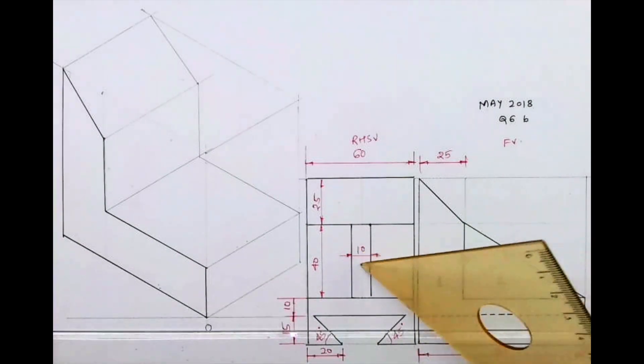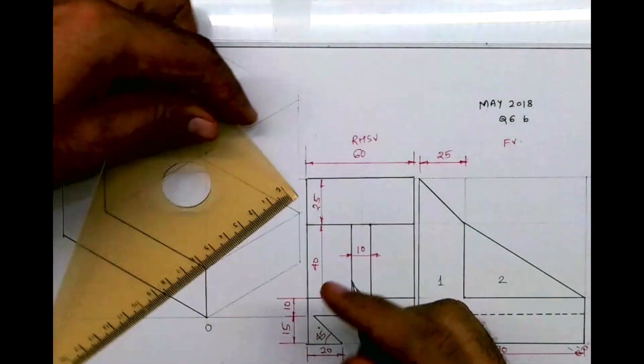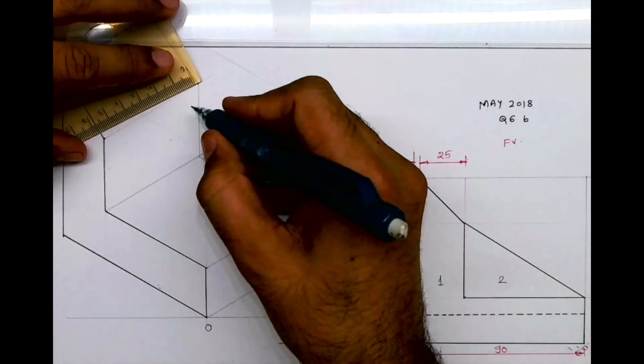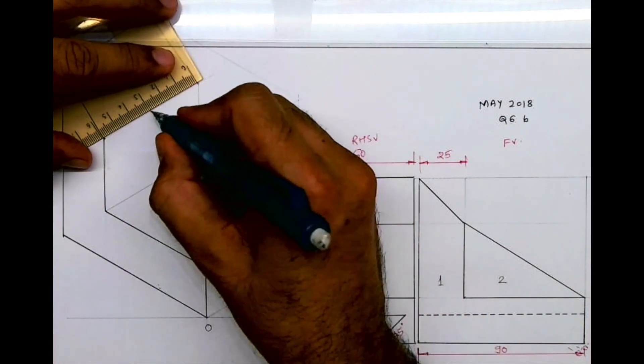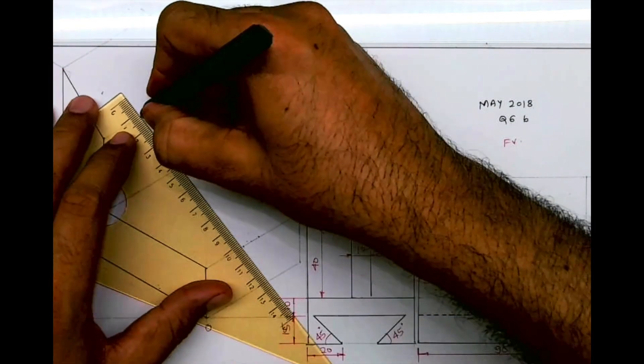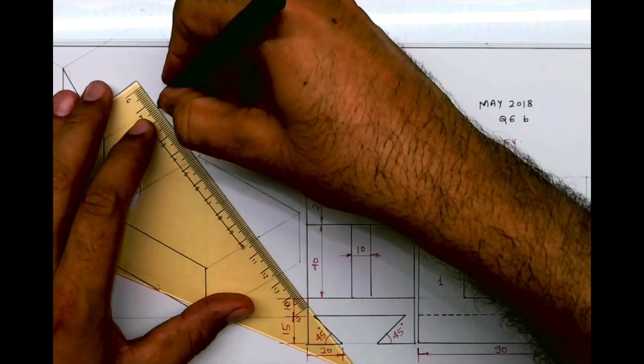Now after this we have this part. So what we'll do, we'll take the midpoint of this and we'll take 5 on both the sides. Again you'll take the midpoint of this and you'll take 5 on both the sides. We are doing part 2. And we'll join this, so we are done with part 2 also.